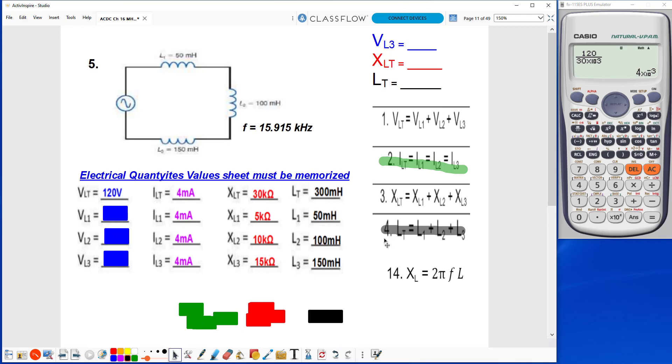Now I can use Ohm's Law to find the VL1 value: 4 milliamps times 5k ohms, 4 times 10 to the negative 3rd, times 5 times 10 to the 3rd, 20 volts.